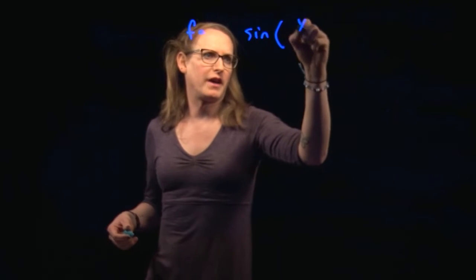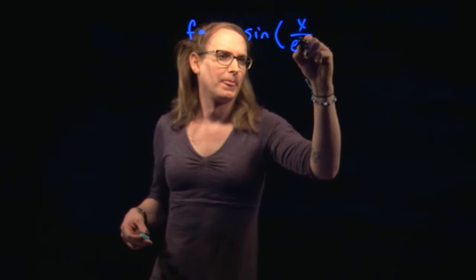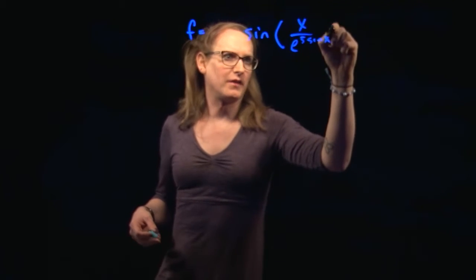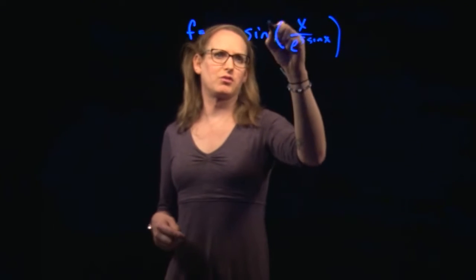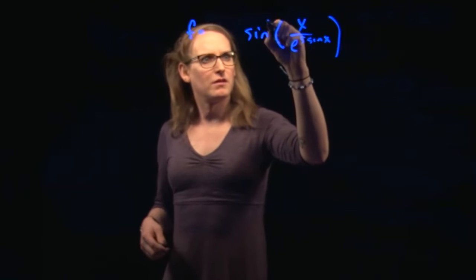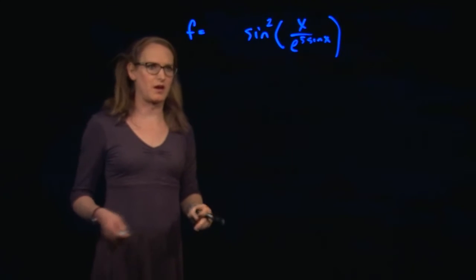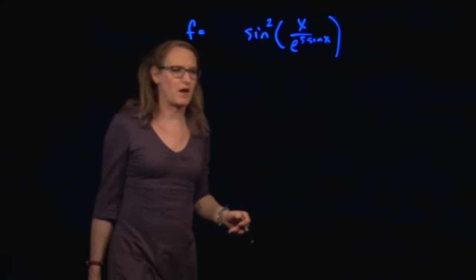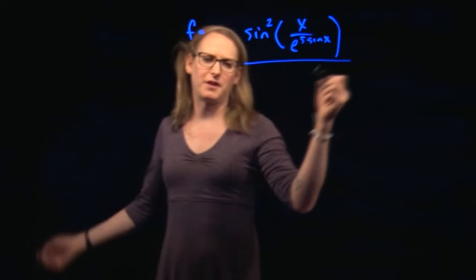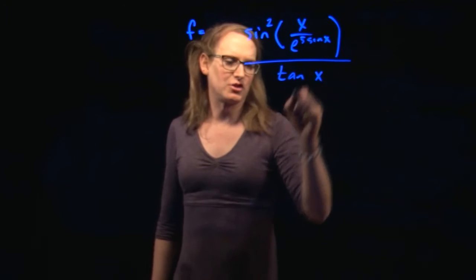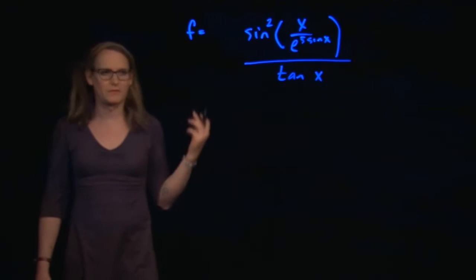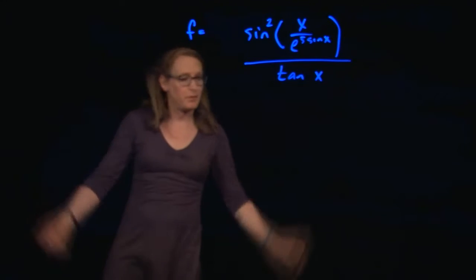So I'm gonna start by writing a function f, and I'm working off the top of my head here. Let's start by putting a polynomial on the outside level. How about we go sine of x over e to the 5 sine of x out there. Let's take this whole thing and square it. So I've got sine squared of x over e to the 5 sine x, and now let's divide that thing by, oh say, tangent of x. I don't know what I've just done to myself as far as the complexity of this thing, but we're gonna deal with it.